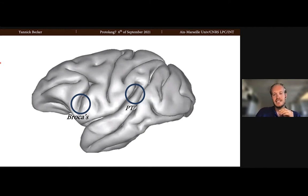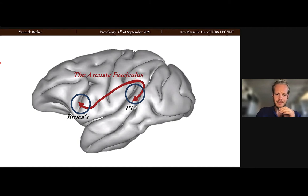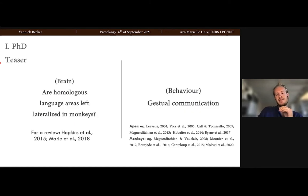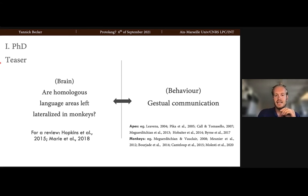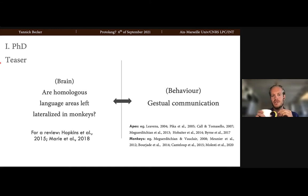The question is whether there's a continuity in non-human primates concerning this brain anatomy. We know from chimpanzees at the population level that homologous language structures are also left-lateralized. Researchers proposed that the precursors of this organization are linked to gestural communication in non-human primates. My work consists in investigating the potential lateralizations of these key structures in monkeys — because this has never been done — and second, investigating the potential links between the communicative gestures of non-human primates and the neuroanatomical organization homologous to language in humans.